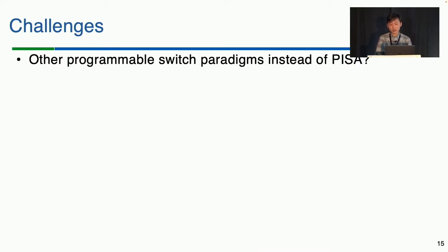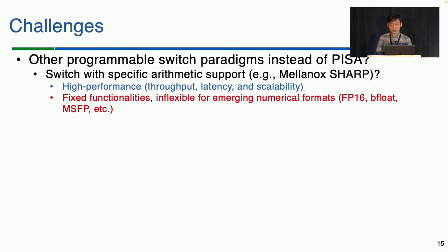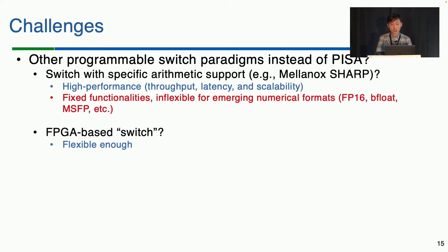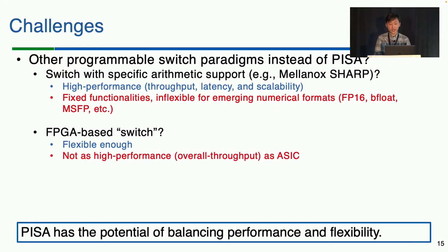There are other programmable switch paradigms that may support floating-point more easily. Switches with dedicated arithmetic units can achieve high performance, but fixed functionality leads to inflexibility in supporting emerging floating-point formats, especially in the machine learning community. On the other hand, FPGA-based switches offer enough flexibility, but performance remains a big concern. Hence, PISA is still the desirable platform for a balanced combination of performance and flexibility.